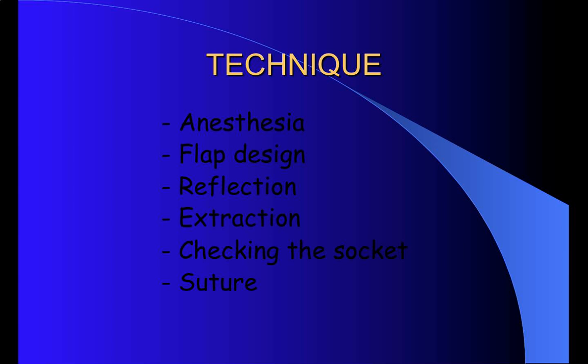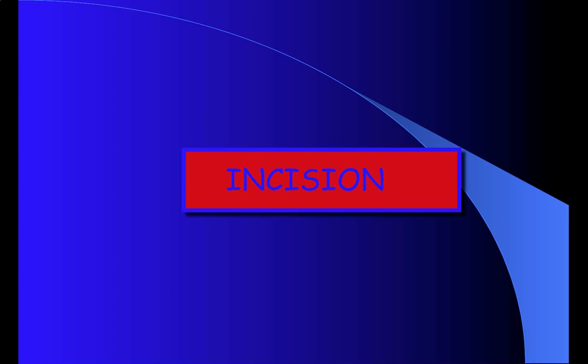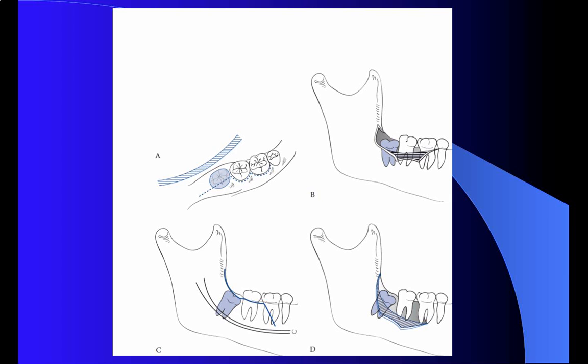After the reflection of the flap, after the extraction, the next step will be to check the socket before the suture, and then we will proceed with post-operative management. The incision must be made over the area where the lower third molar is — that is the end of the jaw, in the angle, over the gum, in different shapes.